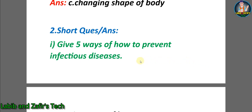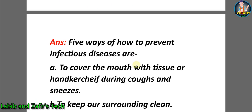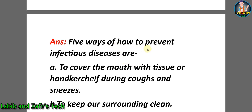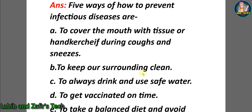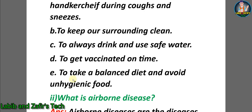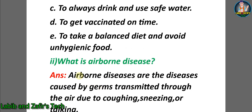Now let's go through some short question answers. Question one: give five ways of how to prevent infectious diseases. Answer: A) cover the mouth with tissue or handkerchief during coughs and sneezes, B) keep our surroundings clean, C) always drink and use safe water, D) get vaccinated on time, E) take a balanced diet and avoid unhygienic food.